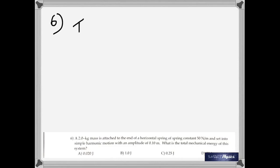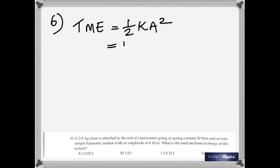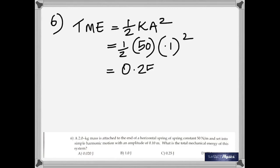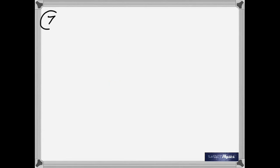Number six: a 2-kilogram mass is attached to a horizontal spring with spring constant 50 newtons per meter, set into simple harmonic motion with amplitude 0.10 meters. What is the total mechanical energy? The formula for total mechanical energy is one-half k a squared, which equals the maximum potential energy or the maximum kinetic energy. Just substitute k and amplitude to get 0.25 joules.